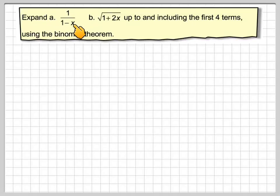Expand a, 1 over 1 minus x, and b, square root of 1 plus 2x, up to and including the first four terms using the binomial theorem.